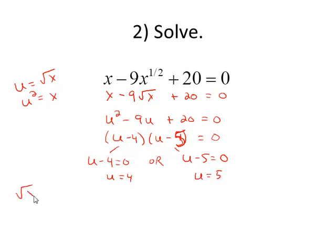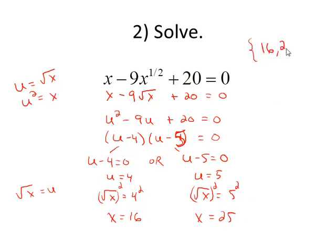Put the square root of x equals 4. Square both sides, x equals 16 is my first solution. For the other branch, square root of x equals 5. Square both sides and my other solution is x equals 25. And you can check, but both of these do work.